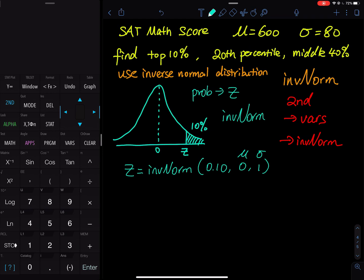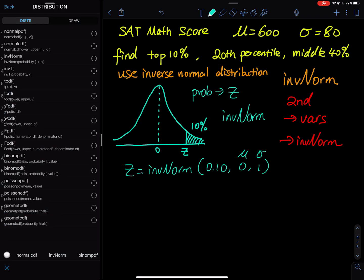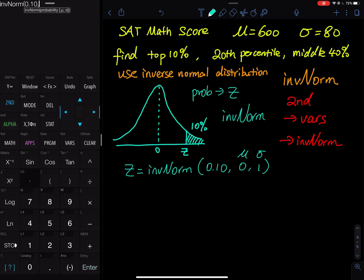Look at my calculator. Second vars, and then inverse norm is one step underneath normal CDF. So we pick inverse norm, then we input 10 percent, comma, zero, comma, one. If you're using a newer calculator, you see a menu. On the area, you input 10 percent. The mu, you input zero. The standard deviation, you input one. Then you choose paste. If you're using an older calculator like mine, you have to type these three numbers and separate them by a comma.